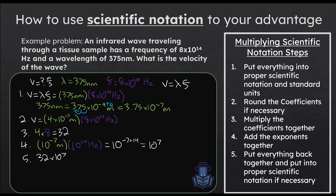Finally, make sure it's in proper scientific notation. To get the coefficient to a number between 1 and 10, we move the decimal place to the left once, which makes the exponent more positive. So our answer is 3.2 × 10^8. Even though we rounded, since this is a multiple choice exam there's going to be an answer choice significantly closer to this number than any of the others. The actual math we're doing is very simple — just simple addition and simple multiplication.